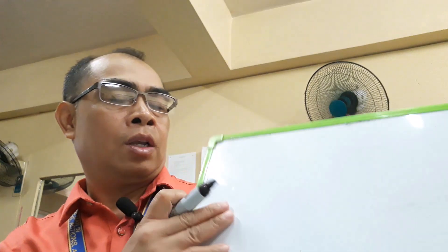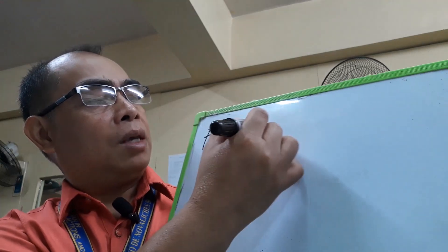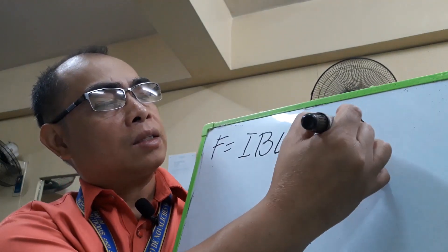The direction of this force is given by Fleming's left hand rule, and its magnitude is given by the equation F = IBL sin θ. So for the force, we have F is equal to IBL sin θ.